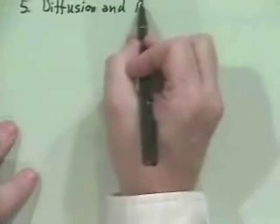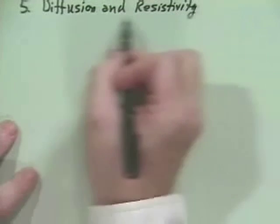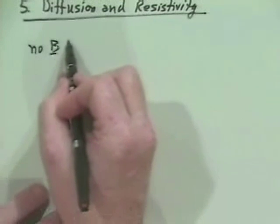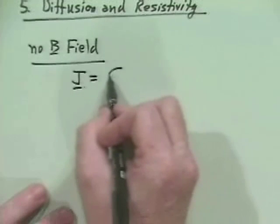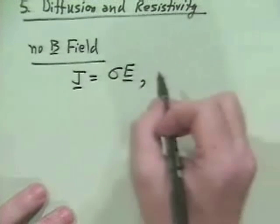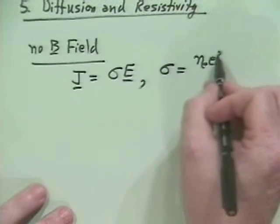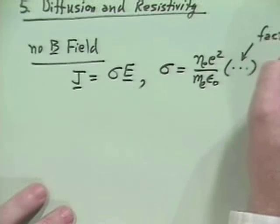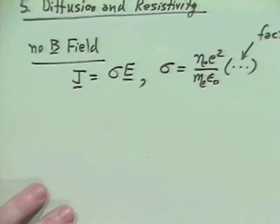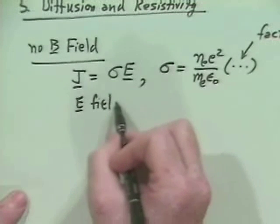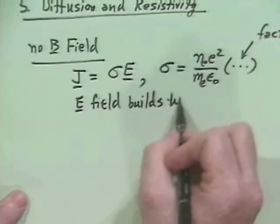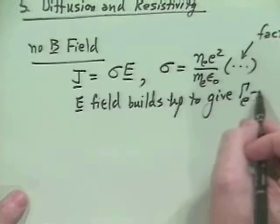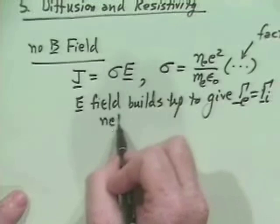So it was diffusion and resistivity. And basically, we just used the fluid equations to address this. And if we had no B field, then we found that we had an electrical conductivity, J is equal to sigma e, Ohm's law, electrical conductivity, that sigma was equal to n sub e e squared over m sub e epsilon naught. And there's a factor here which had to do with whether or not you have electron-electron, electron-ion collisions and stuff like that. And e field builds up to give gamma e equals gamma i net ambipolar flux.